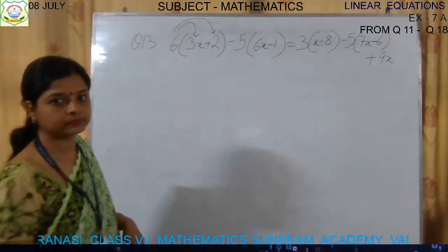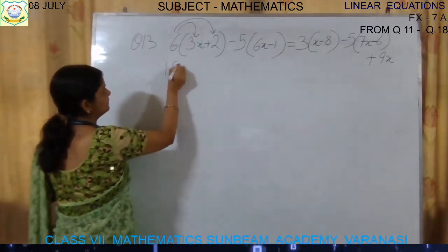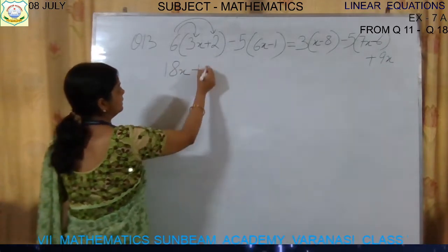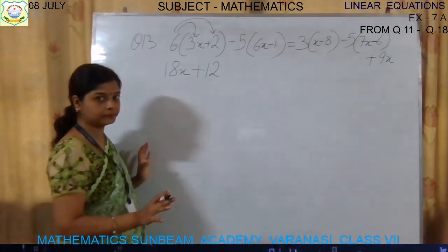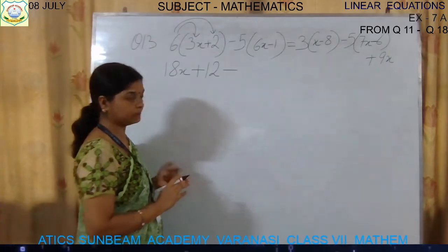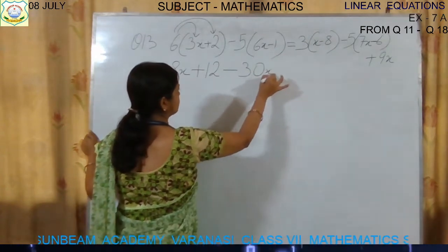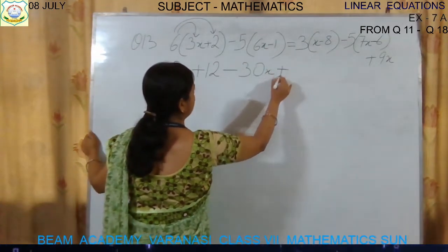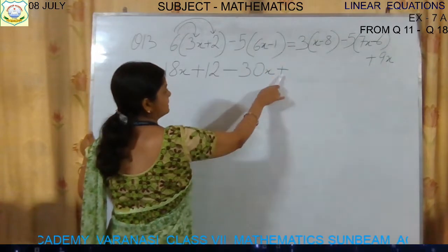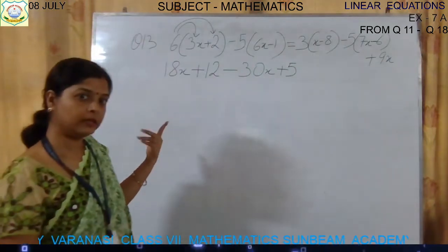Let's open the brackets. Plus times plus gives plus: 6 threes are 18x. Plus times plus: 6 twos are 12. First bracket open. Now minus times plus gives minus: 5 sixes are 30x. Minus times minus gives plus — same sign, so plus: 5 ones are 5. We have opened the left-hand side part.